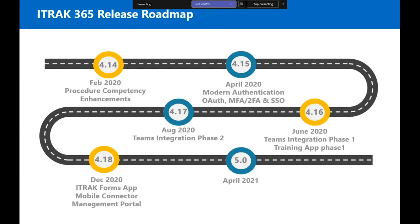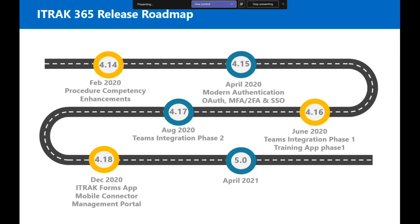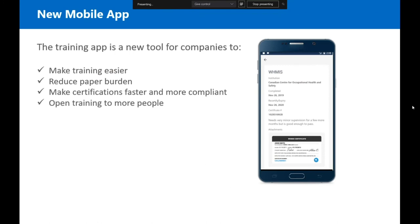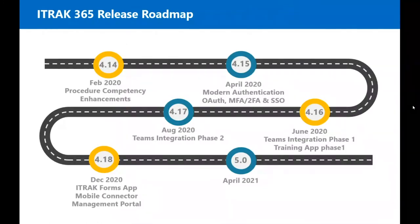For our roadmap, the current release is 4.15. Version 4.16 will be coming out in a couple of weeks and will include some of the initial Teams integration and phase one of the beta version of the training app. Phase two will come later at the end of the summer and will include the rest of the Teams integration. By end of year we'll have the additional forms app and the mobile connector management portal.